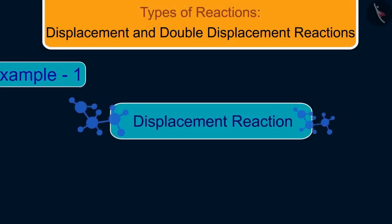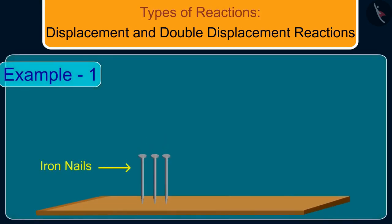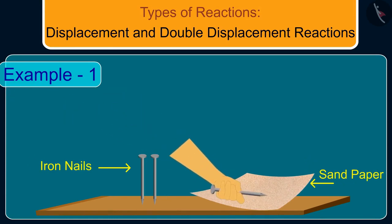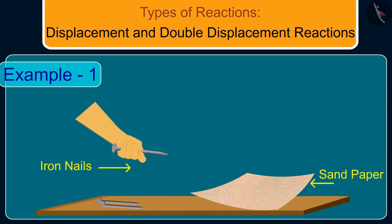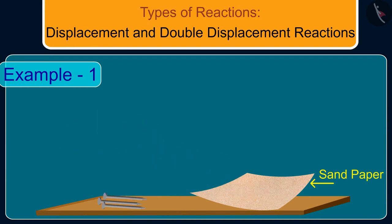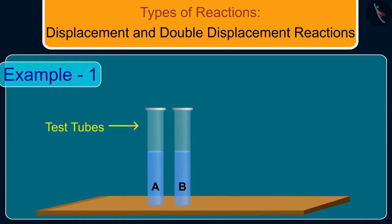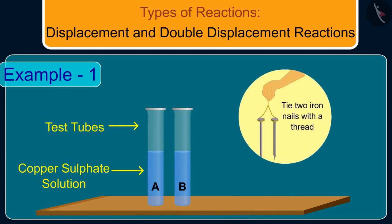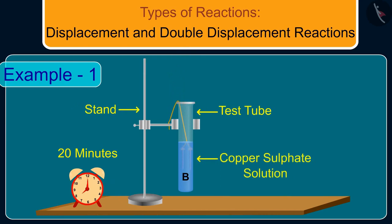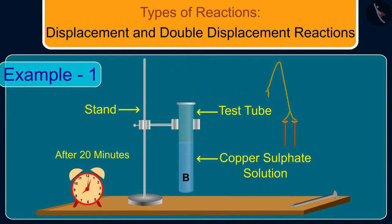Let us understand displacement reactions with the help of an example. Take three iron nails and clean them by rubbing with sandpaper. Then take two test tubes marked as A and B, and in each test tube take about 10 ml of copper sulfate solution. Tie two iron nails with a thread, immerse them carefully in the copper sulfate solution in test tube B for about 20 minutes, and keep one iron nail aside for comparison. After 20 minutes, take out the iron nails from the copper sulfate solution.